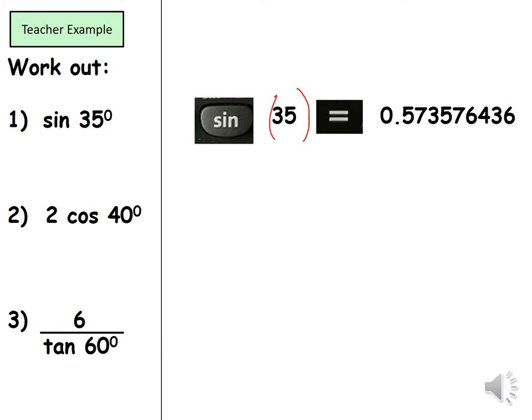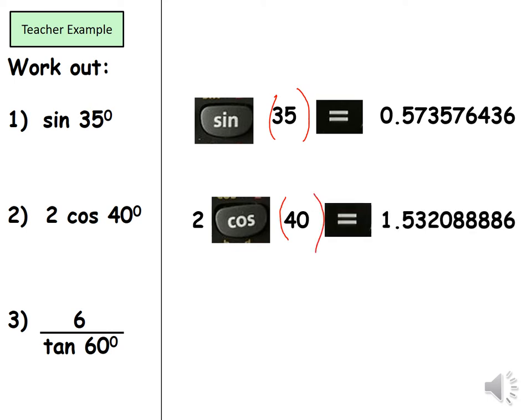So the next one 2 cos 40. So you can start off writing 2 down. You don't need to put times down. You can if you want but it's the same thing so you can write down cos and then again open bracket on the number. So remember you're going to see something like this on your calculator. You need to close the bracket press equals and your answer.